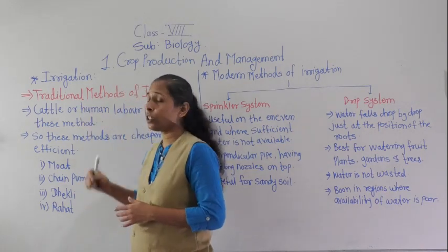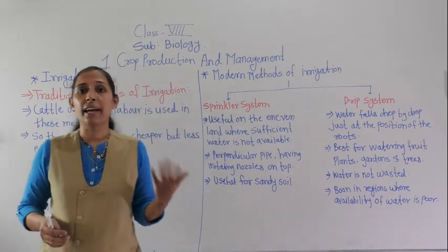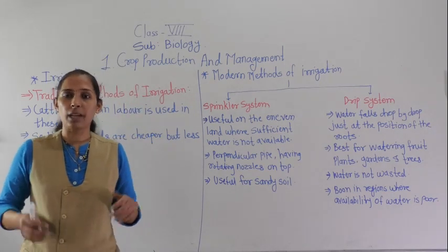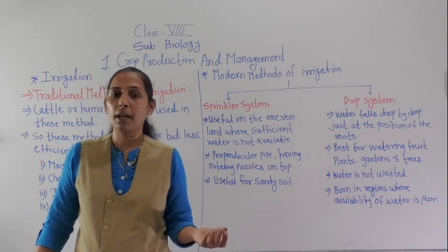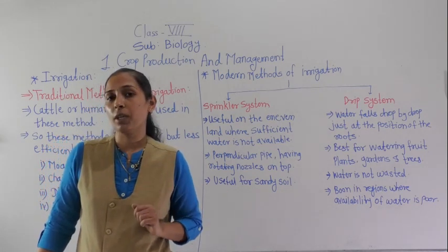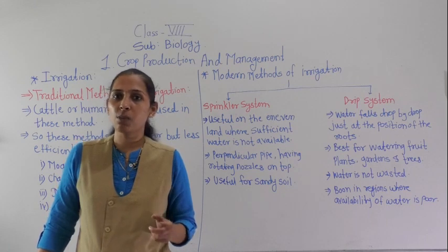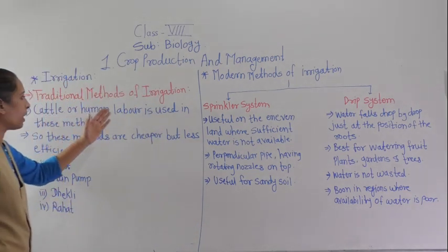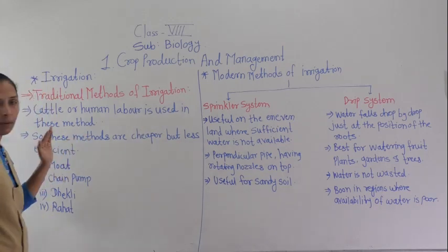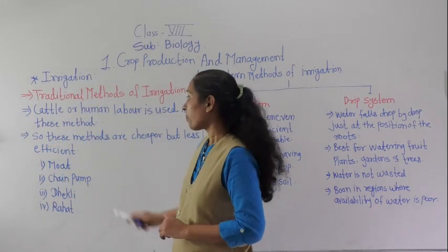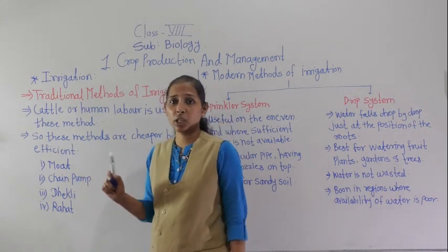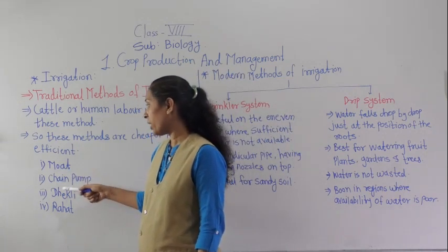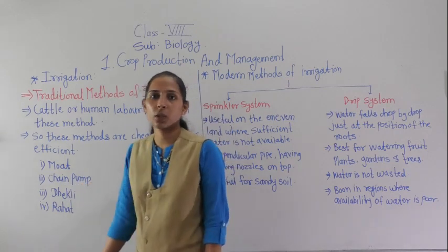In the traditional method, there was use of caters as well as laborers. The human laborer work is more in these methods. So caters are also used to irrigate the plants or crops. The different traditional methods include moat, chen, perm, dhetti, and rahut.